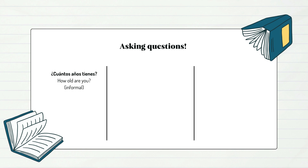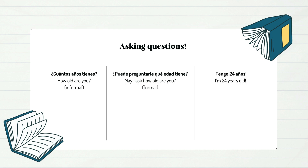But we would like to know more about our new friend, so we can also ask: ¿Cuántos años tienes? — How old are you? Or more formally: ¿Puede preguntarle qué edad tiene? — May I ask, how old are you? And a simple answer can be: Tengo veinticuatro años — I'm twenty-four years old.